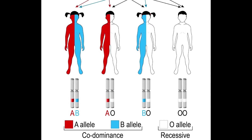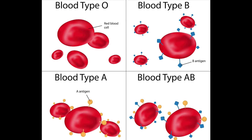On the cellular level, this is what's happening. The O allele produces a non-functional cell surface protein that never makes it to the cell membrane. The A and B alleles produce different functional versions of the same membrane protein. So when both alleles are present, both proteins make it to the cell surface, making A and B co-dominant alleles since the heterozygote shows the phenotype of each homozygote separately.